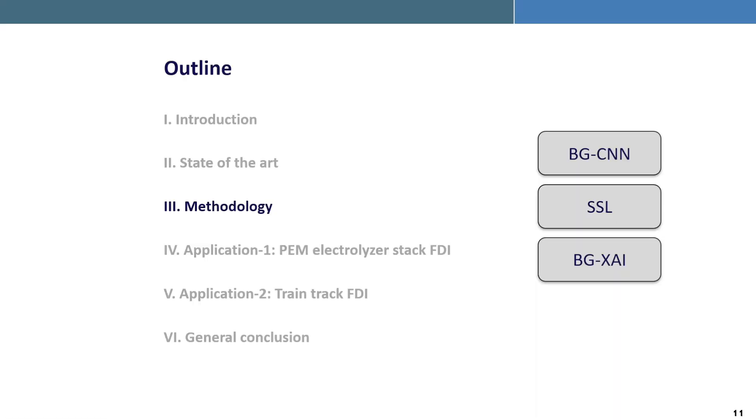Here we have divided the methodology section into three categories based on three main methodological contributions. First is Bond Graph's Convolutional Neural Network or BG-CNN where we use Bond Graph as feature engineering step which helps us to generate fault sensitive feature to train a CNN model.